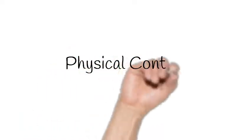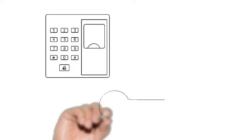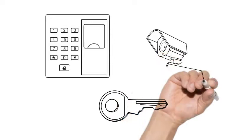Physical controls are the security controls that can often be touched and provide physical security to protect your information assets. Common physical controls include doors, locks, camera surveillance, and alarm systems.